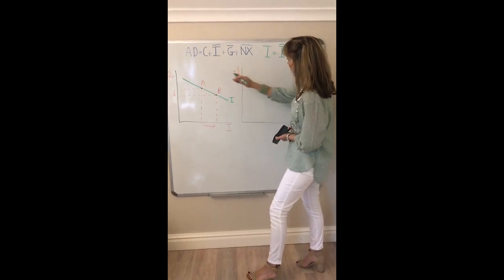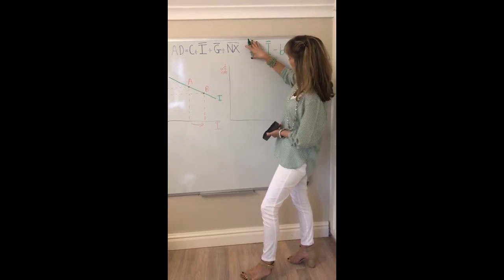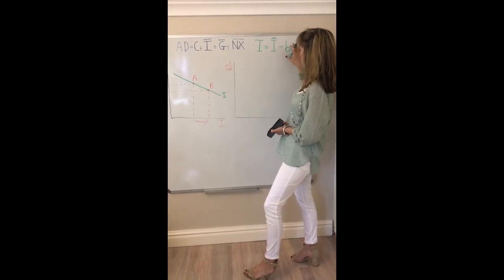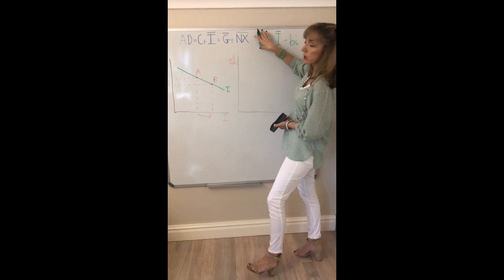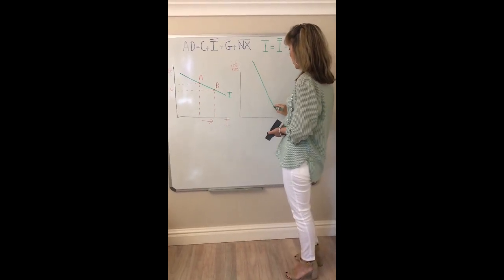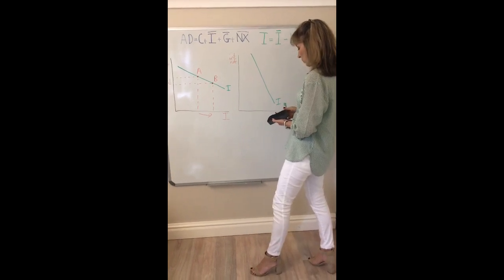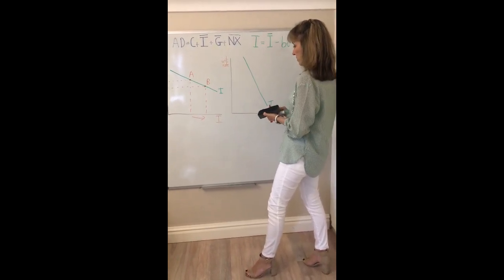We're going to now show what difference B makes. B is the responsiveness of planned investment to the interest rate. We know there's a negative sign, but how responsive is planned investment to a change in interest rate? So let's draw a steeper investment schedule and see what difference that makes in our model.